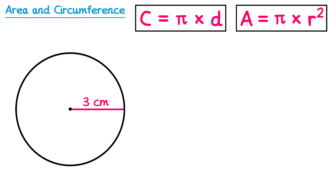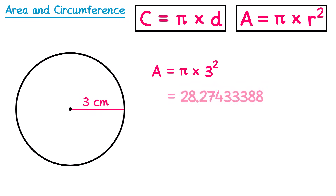For this circle, we've been given the radius at 3. So we do area equals pi multiplied by the radius, which is 3, but we must remember to square it. If we round it to one decimal place, we get 28.3. The units this time will be slightly different — we usually measure area in centimetres squared or metres squared, so since the radius was in centimetres, the area will be centimetres squared.